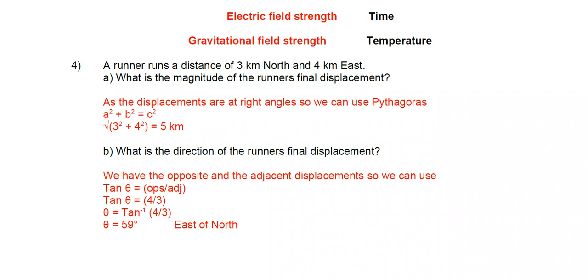So tan theta is 4 over 3. Theta is tan to the minus 1 of 4 over 3, and we get an angle of 59 degrees east of north.